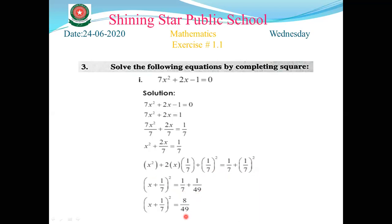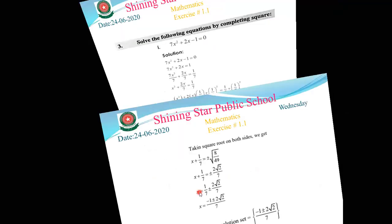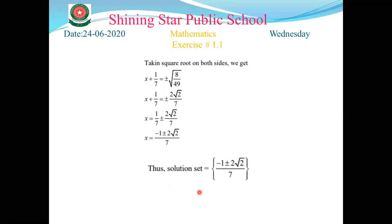On the right-hand side, 1/7 + (1/7)² = 1/7 + 1/49. Taking the LCM of 7 and 49, which is 49, we get 8/49. In the next step, we take the square root on both sides.